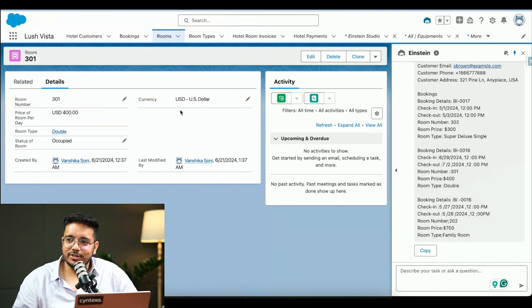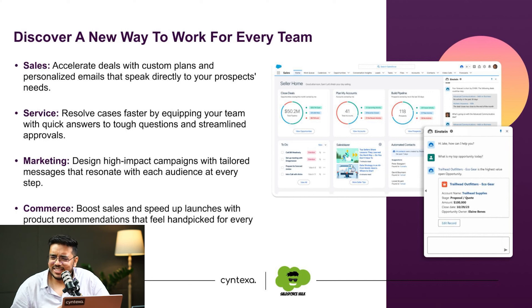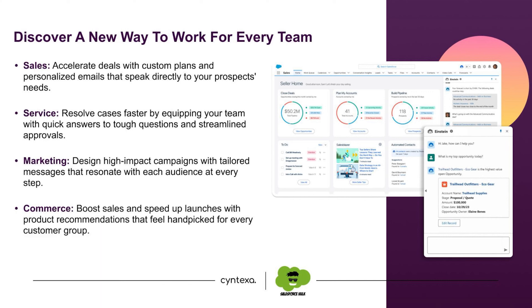Coming back to the slides — next up, what Einstein Copilot can do in terms of departments. In sales, service, marketing, and commerce it can definitely help us. In sales it can create custom plans and personalized emails and provide quick answers. In marketing it can provide personalized messages. From the commerce perspective it can provide product recommendations and product descriptions based on certain information.